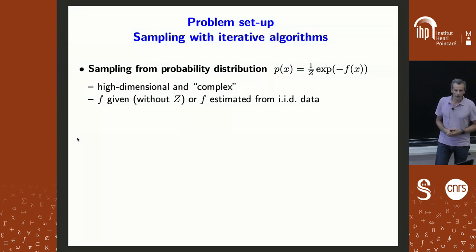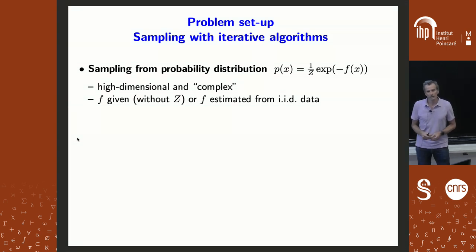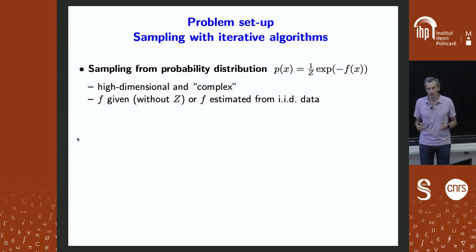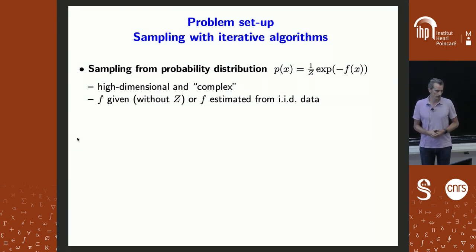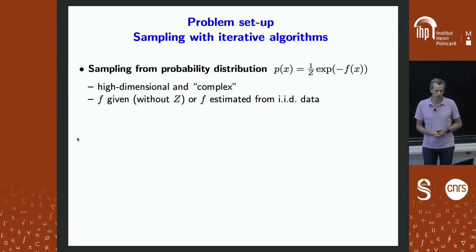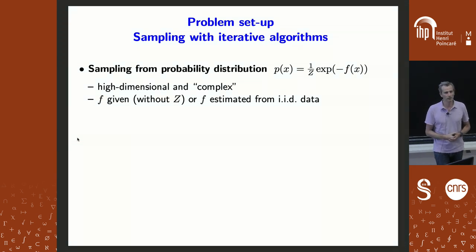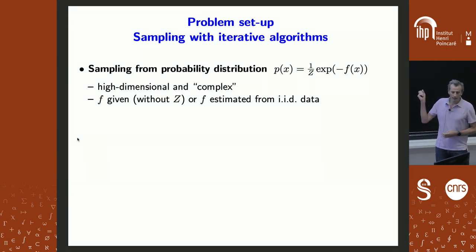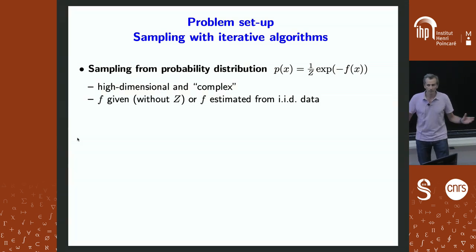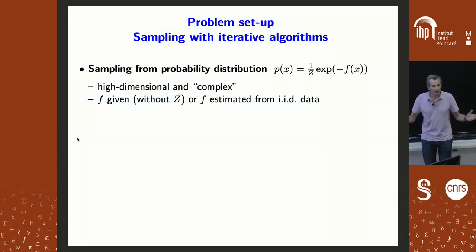The key novelty here will be that I'm going to look at cases where f may not be given as a function, but instead we observe samples from the distribution, and the goal will be to generate new samples. What makes the problem difficult is that x will live in a high-dimensional space — images, so millions of pixels.